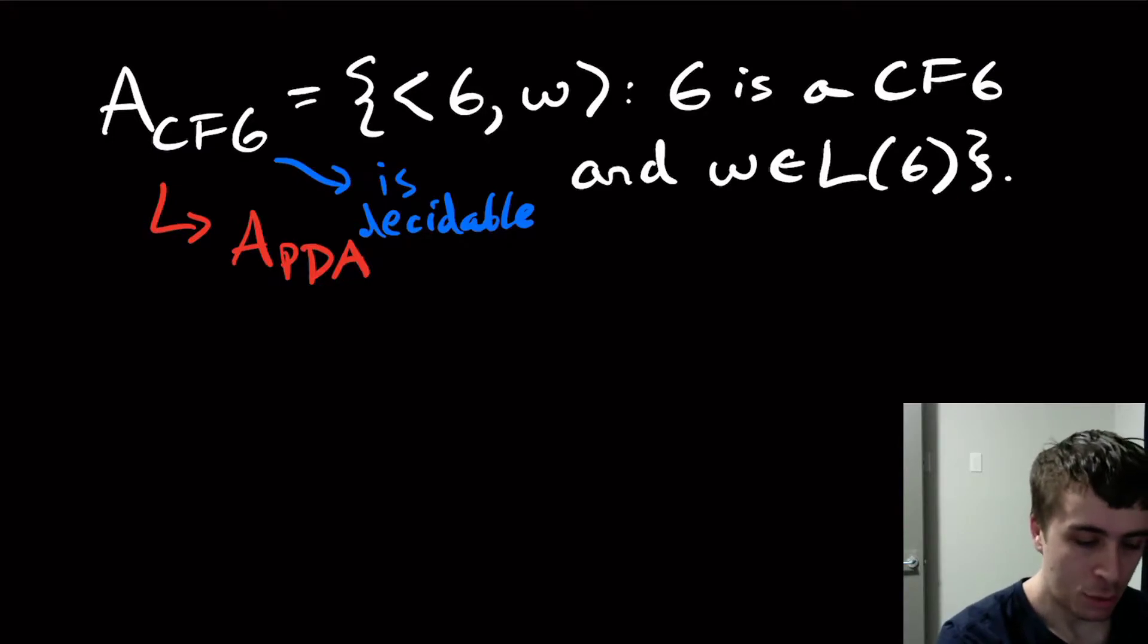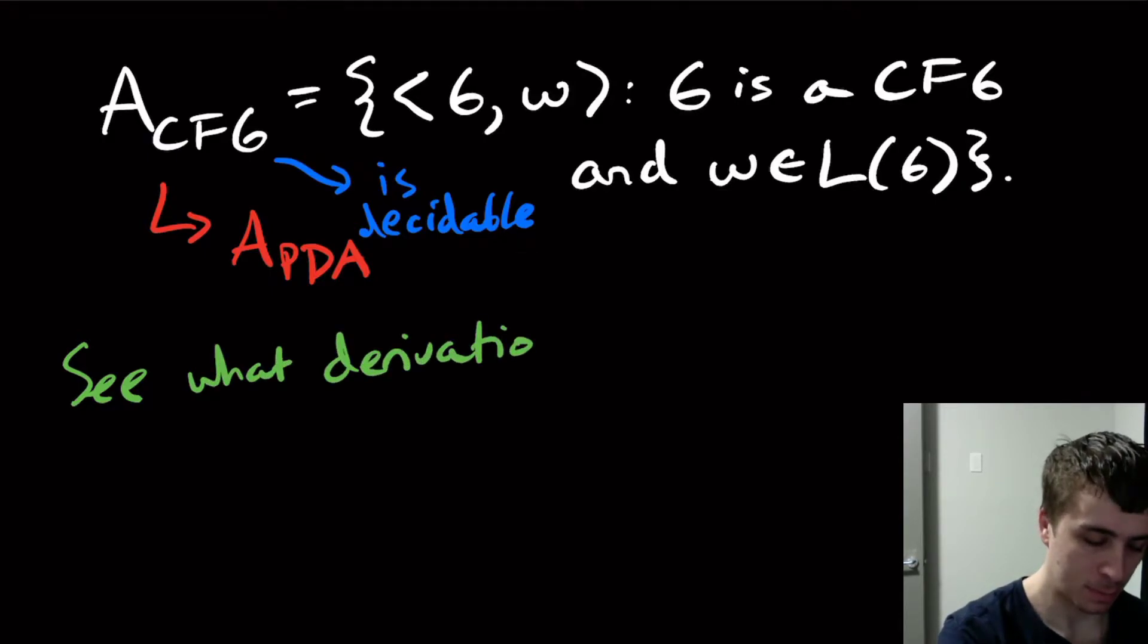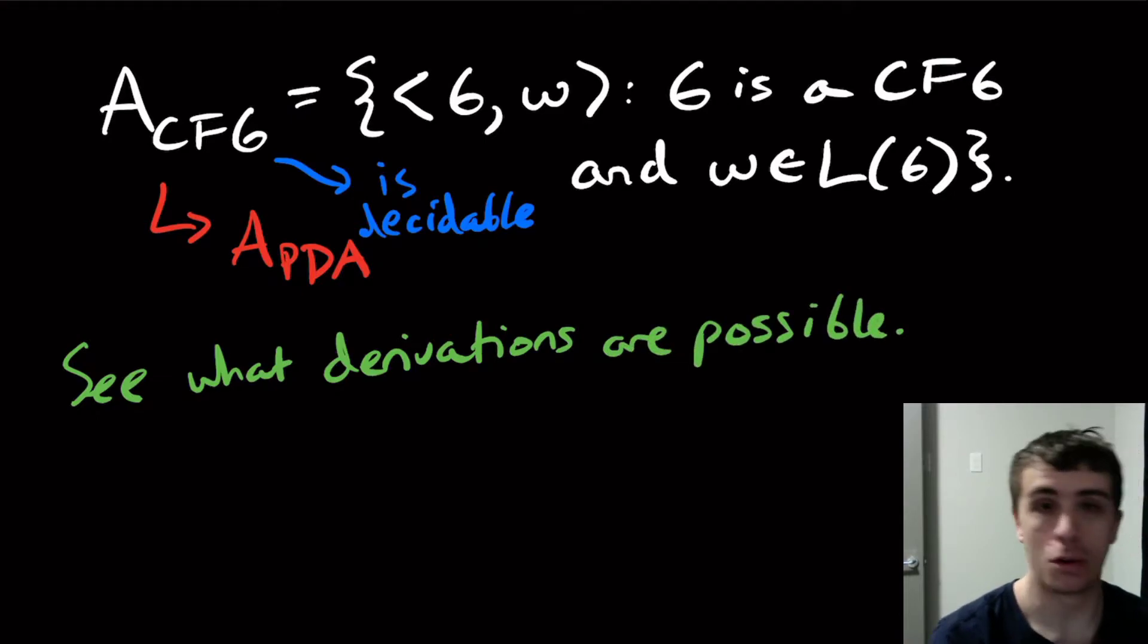So how do we actually approach solving this? Well, what we want to do is to see what derivations are possible, if any. Because there might not actually be a derivation. And one thing that's kind of annoying is that we don't know necessarily how long the derivation is going to be. Unlike with a DFA where I know how many states I have to see just because I read one character at a time. Here I have absolutely no idea how long this is going to take. And there are actually many ways of approaching this.